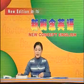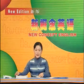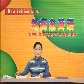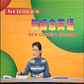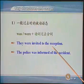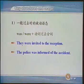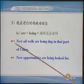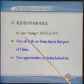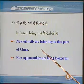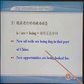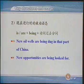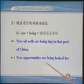现在我们总结一下除一般现在时以外，其他各种时态的被动语态。首先，一般过去时的被动语态，构成是 was 或者 were 加上动词的过去分词。例如：They were invited to the reception. 他们被邀请参加招待会。The police was informed of the accident. 警察被告知了那起事件的发生。再来看现在进行时的被动语态，由 is 或者 are 加上 being 再加动词过去分词构成。比如：New oil wells are being dug in that part of China. 人们在中国的那一片地区正在挖掘新的油井。New opportunities are being looked for. 人们正在寻找新的机会。